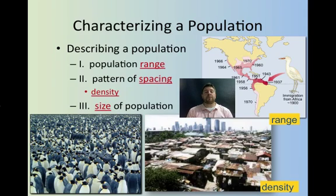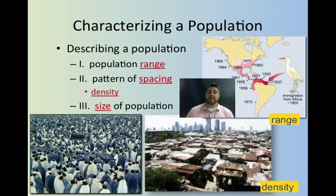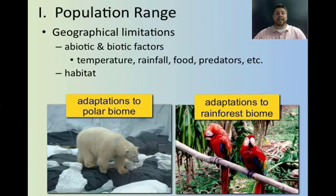When we look at a population, there's three main ways that we're going to characterize it: the population range, its spacing, and its size. Population range is just the geographical limits of the population, and a lot of those are due to the abiotic and biotic factors, like temperature and rainfall, and whether or not that species is adapted to live in that environment.